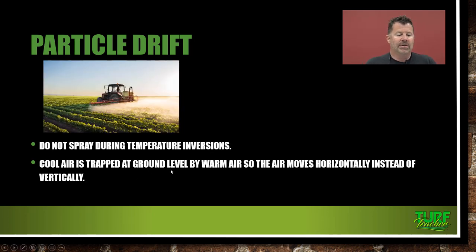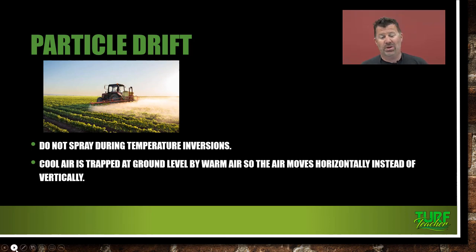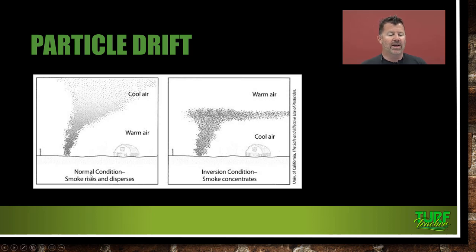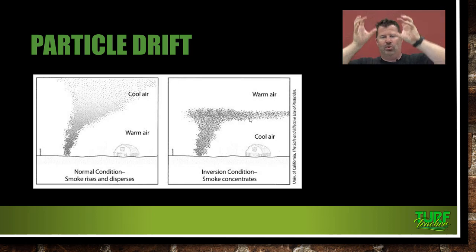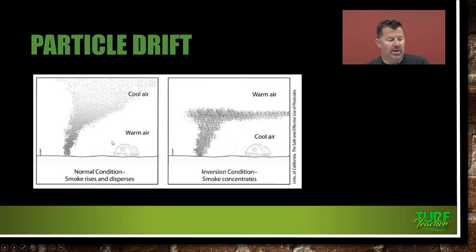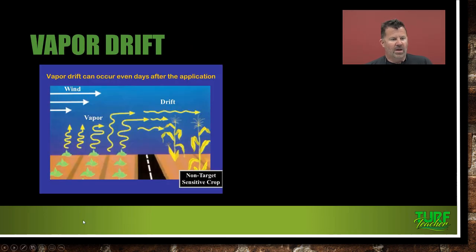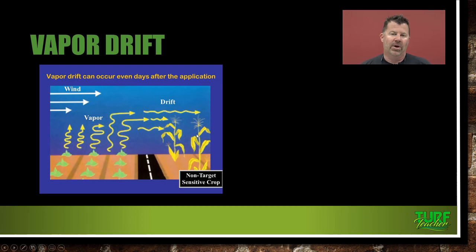Do not spray during temperature inversions. A temperature inversion is when cool air is trapped at ground level by warm air so that the air moves horizontally instead of vertically. Under normal conditions, smoke rises and disperses. Under inversion conditions, smoke concentrates and hangs. You don't want to spray during these inversions because if you have pesticide vapor drift hanging out right there, it can fall and actually cause damage to neighboring properties. Vapor drift can occur even days after the application — the pesticide vapor rises into the air and can affect crops on the other side of the road days later.